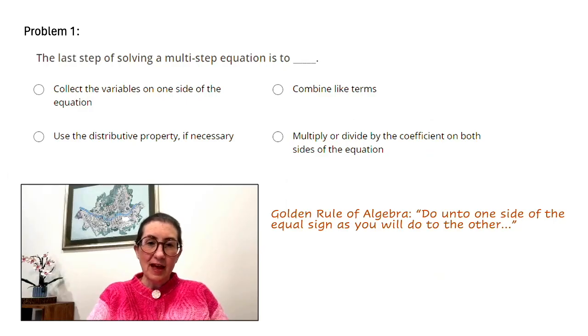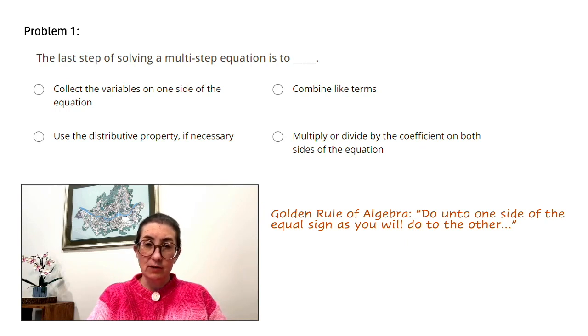Problem number one. The last step of solving a multi-step equation is to: collect the variables on one side of the equation, or combine like terms, or use the distributive property if necessary, or multiply or divide by the coefficient on both sides of the equation.